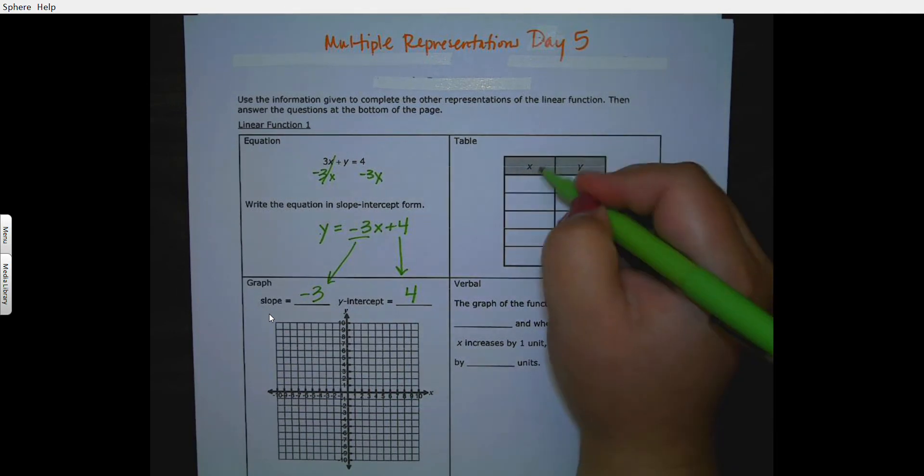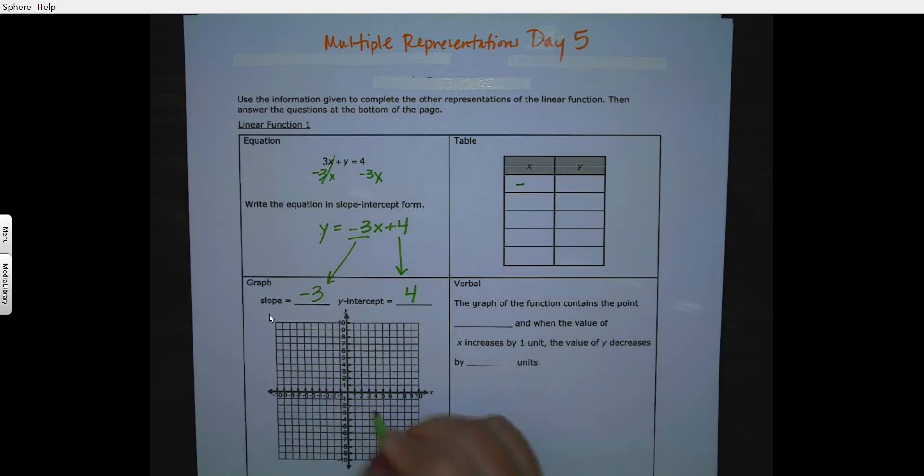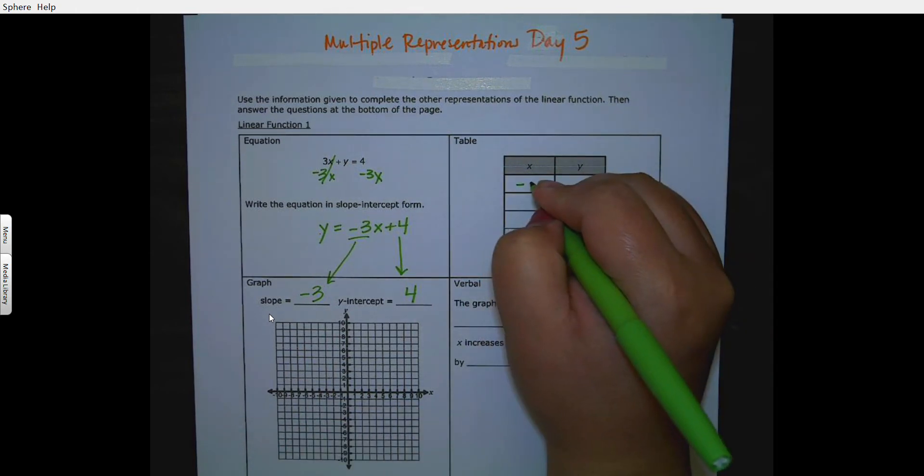Here I get to choose my x's, so I'm actually going to choose some negatives because I have a negative side here and a positive side. So I'm going to choose negative 2, negative 1, 0, 1, and 2.